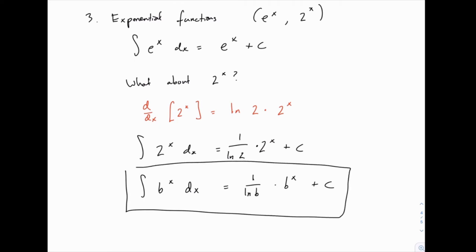Notice that this applies also to e to the x. If you plug e in as the base, you get 1 over the natural log of e, which is just 1 times e to the x plus c. So the integral of e to the x is a special case of that more general rule. The general rule for exponential functions isn't too bad, as long as you remember your derivatives for exponential functions — otherwise it's just a matter of memorization.